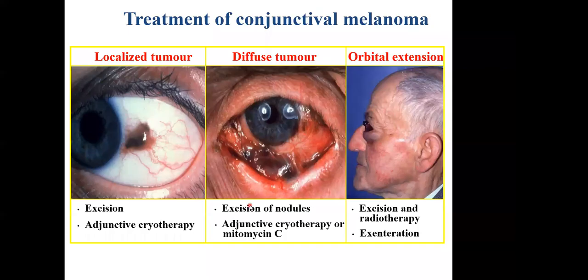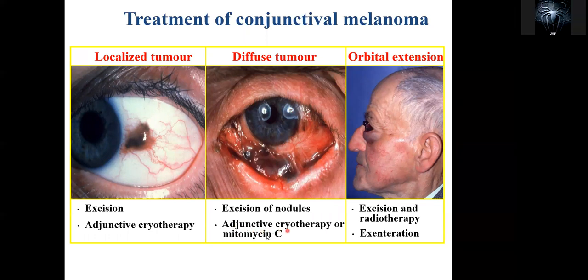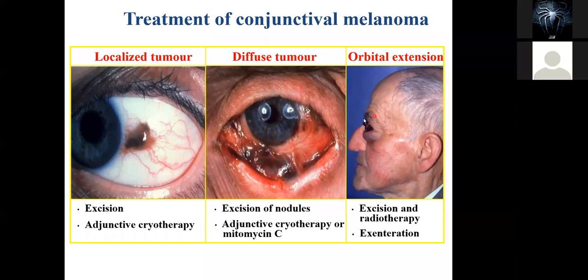Treatment involves going in for excision of the various lesions on the eye, and then you can give chemotherapy in the form of mitomycin C as eye drops. If it is very florid — where it has metastasized to all of the eyelids and parts of the face — then you remove the whole eyeball, excising the whole thing out. Most of these conditions are managed by spot diagnosis.